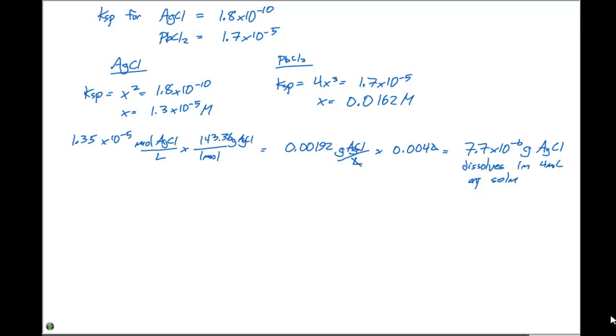If we compare that to the lead chloride, we have 0.0162 moles of lead chloride that dissolve per liter. We can use the periodic table to determine the molar mass of PbCl2, which is 278.2 grams per mole, times the 0.004 liters. This gives us a value of 0.0180 grams of lead chloride that dissolves in 4 milliliters of aqueous solution.